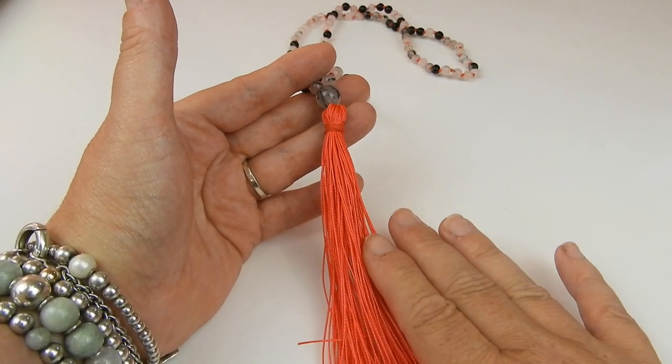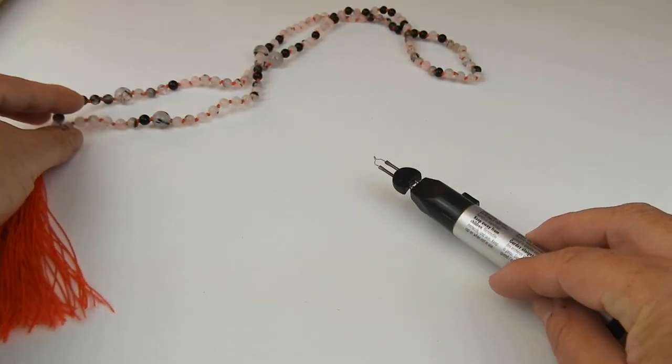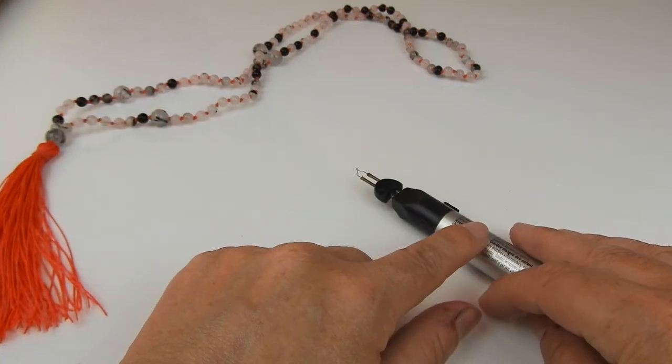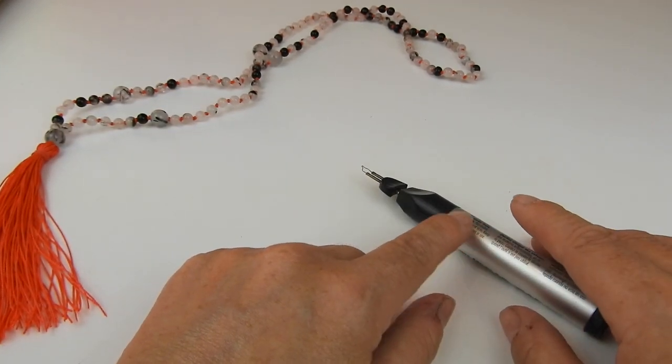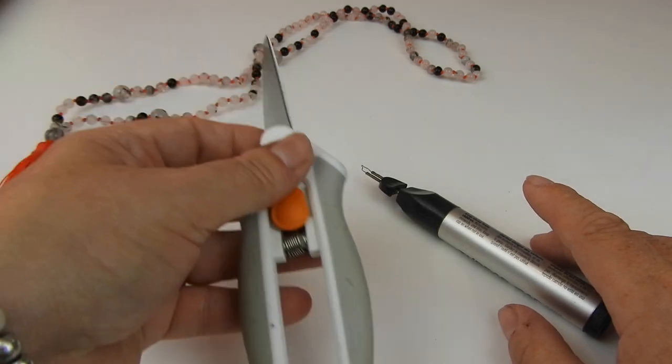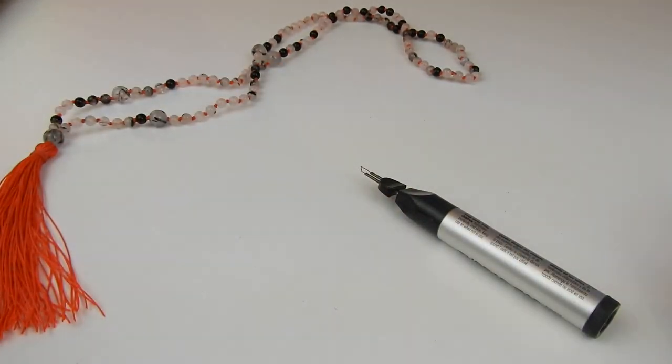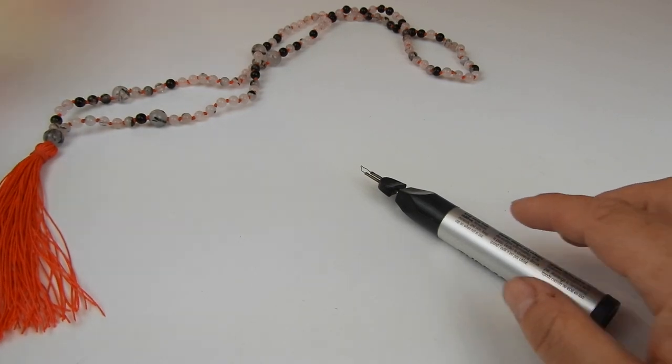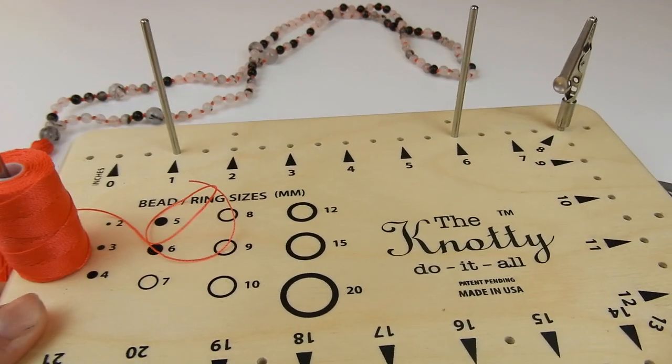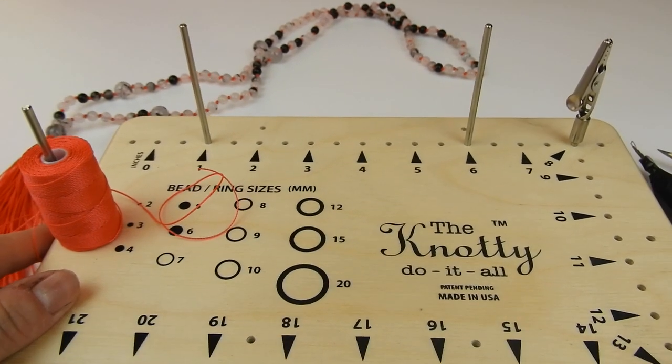The things that we're going to need: a thread zapper to cut through the last thread at the end, a pair of scissors to cut through the actual tassel to make all the loops, and one of our knotty boards.